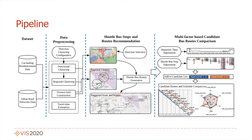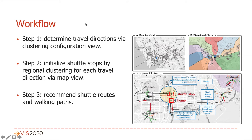Here is the workflow. We developed the shuttle service system and conducted the following steps to allow shuttle service providers to generate and adjust shuttle bus stops, routes, and schedules. Step 1: Determine travel direction via clustering configuration. The first step is to determine the travel direction through directional clustering. We use K-means to obtain the initial number of travel directions.